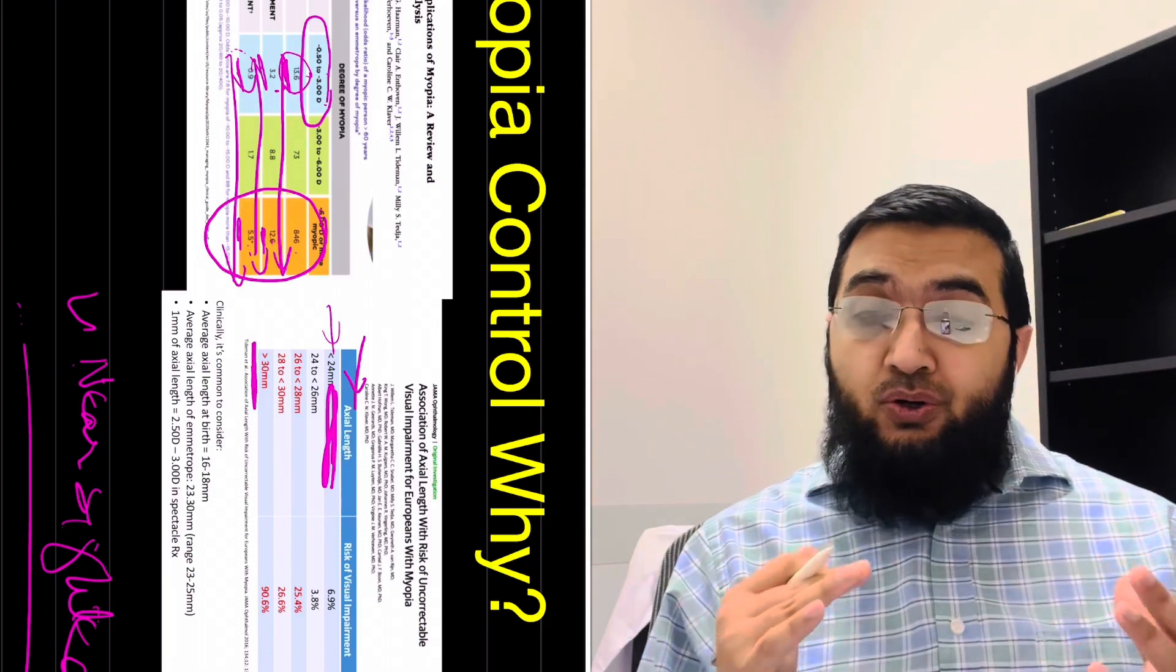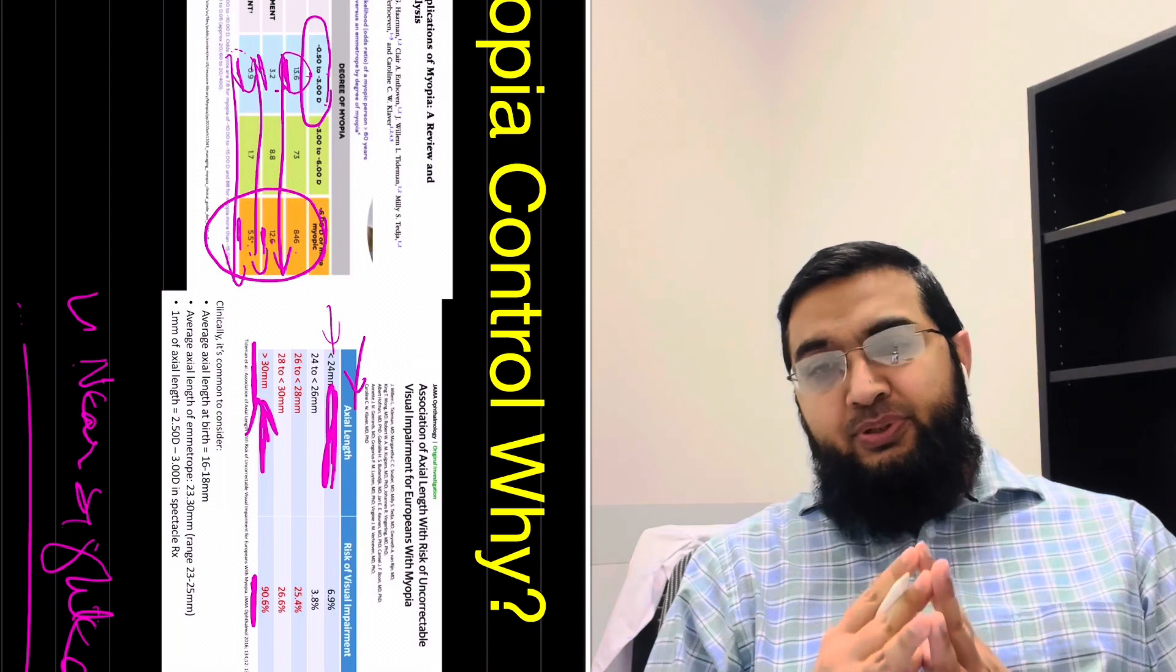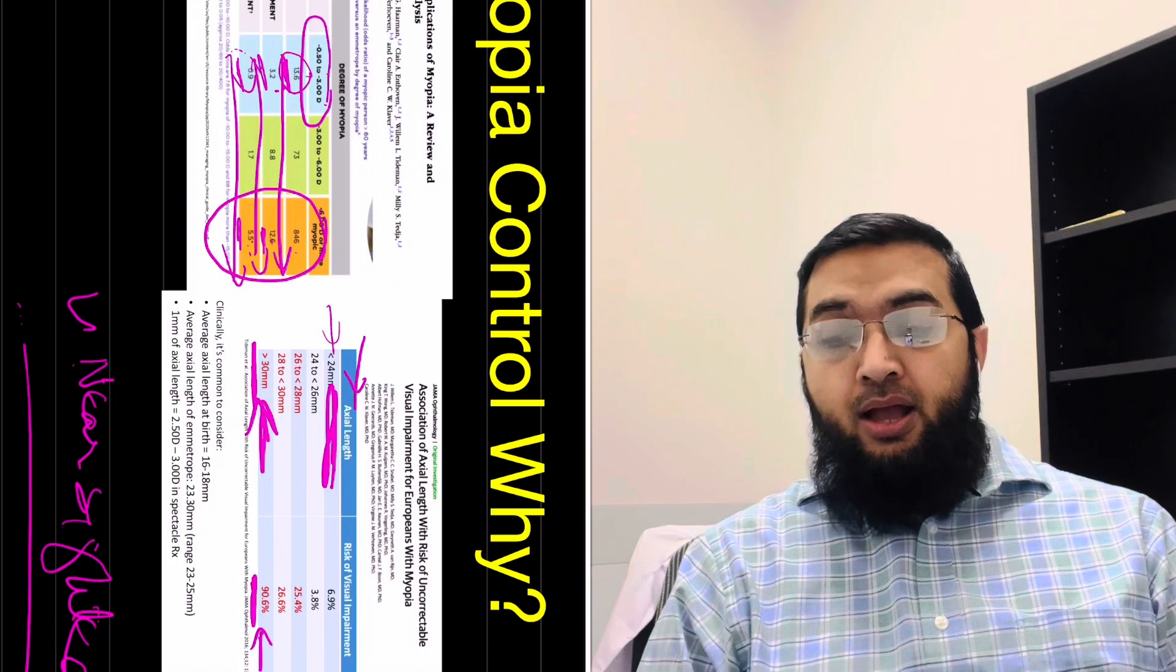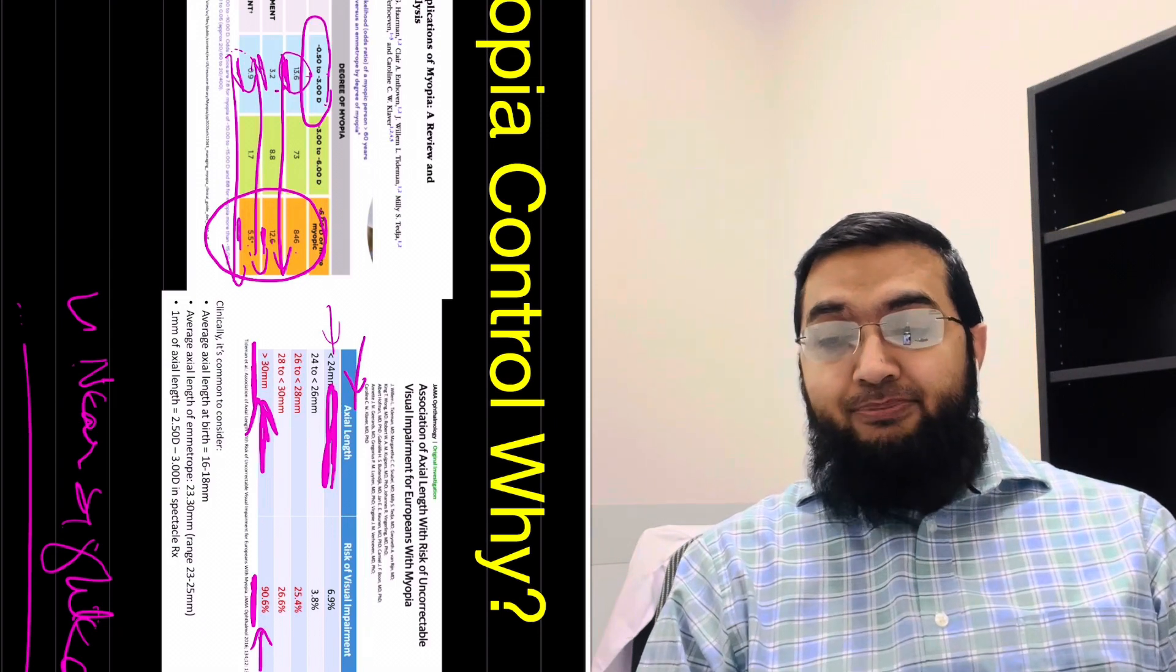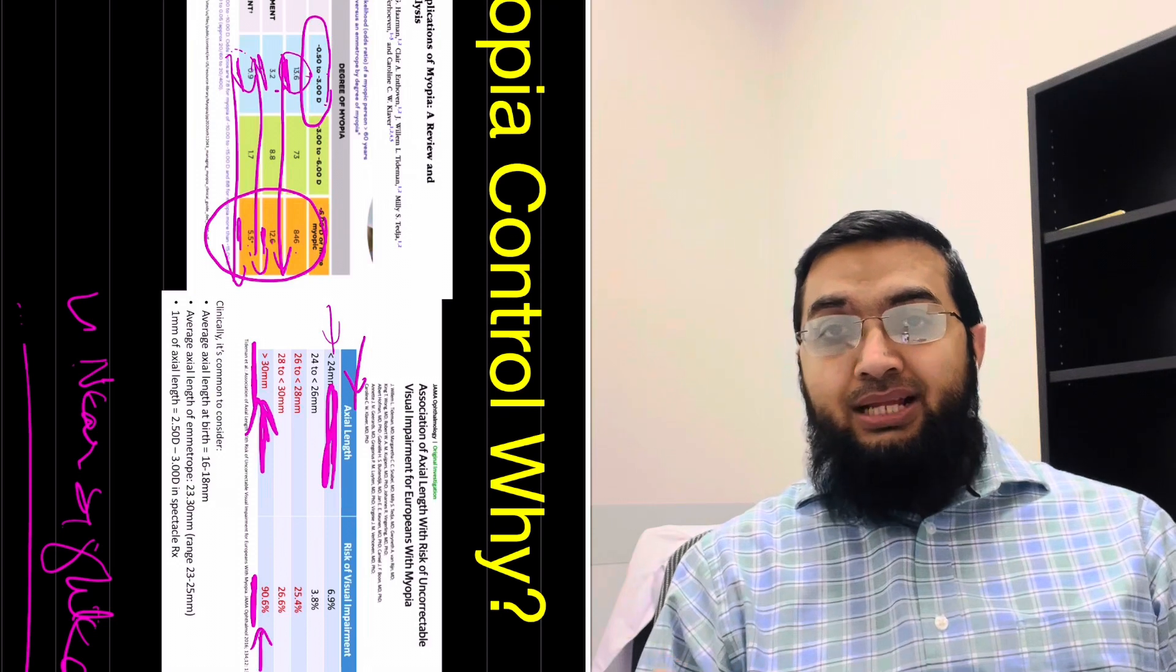MiSight or that multifocal contact lens is giving me a better percentage - if that helps answer the question of some people, that 59% versus 45%. 45% is the GP lens or the hard contact lens or the ortho-K lens.